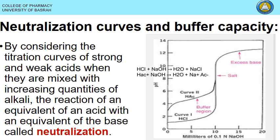The neutralization curve has two axes: the y-axis represents pH and the x-axis represents the amount of base added. When discussing the neutralization curve of strong and weak acids against NaOH, consider adding small milliliters of 0.1 N NaOH to an HCl solution. The neutralization reaction gives H₂O plus NaCl.